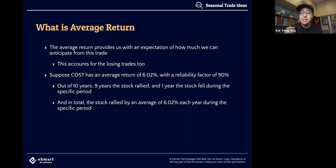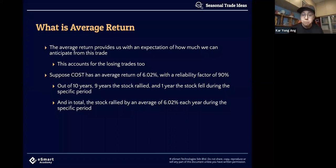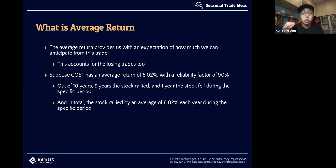That's fantastic — 6% in about one month plus from this trade itself. And 6% is an average, which means for the past 10 years there might be some years you return 3%, some years 5%, maybe 8%. And of course this also accounts for the losing year. A losing year can be negative 0.01% — in other words, a negative year is counted as long as the stock did not rally. However, it does not account for how much it dropped when it didn't rally.